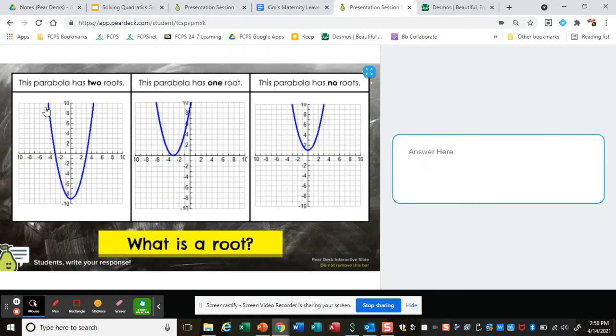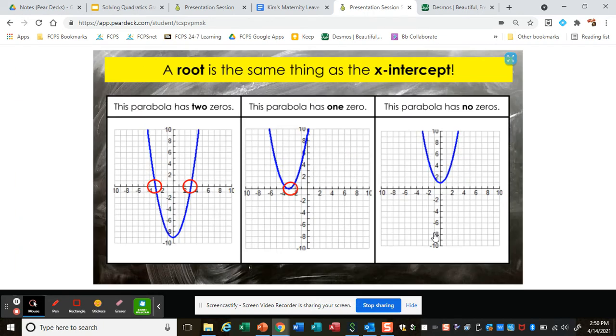What is a root? This parabola has two roots. This one has one root. And this one has no roots. A root is the same thing as a zero and the x-intercept. As you can see, this has two zeros, two roots. One root. No roots.